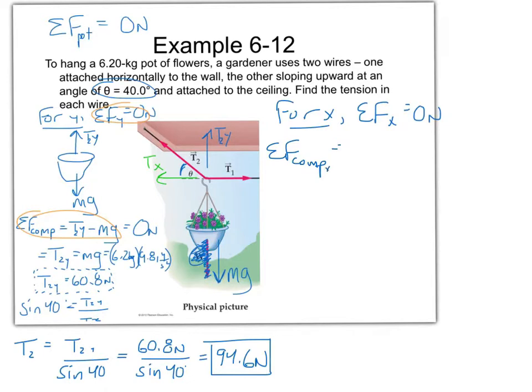Therefore, our component statement of the forces in the x direction would be T1 tension in one minus T2x. Because this wire tension two has a y component and an x component. The x component has to be balanced out by this line. If this line were not there to create that tension, then the flower pot would swing down to the left because T2x is pulling it that way. But this T1 is holding it in place. So first of all, let's find out what T2x is.